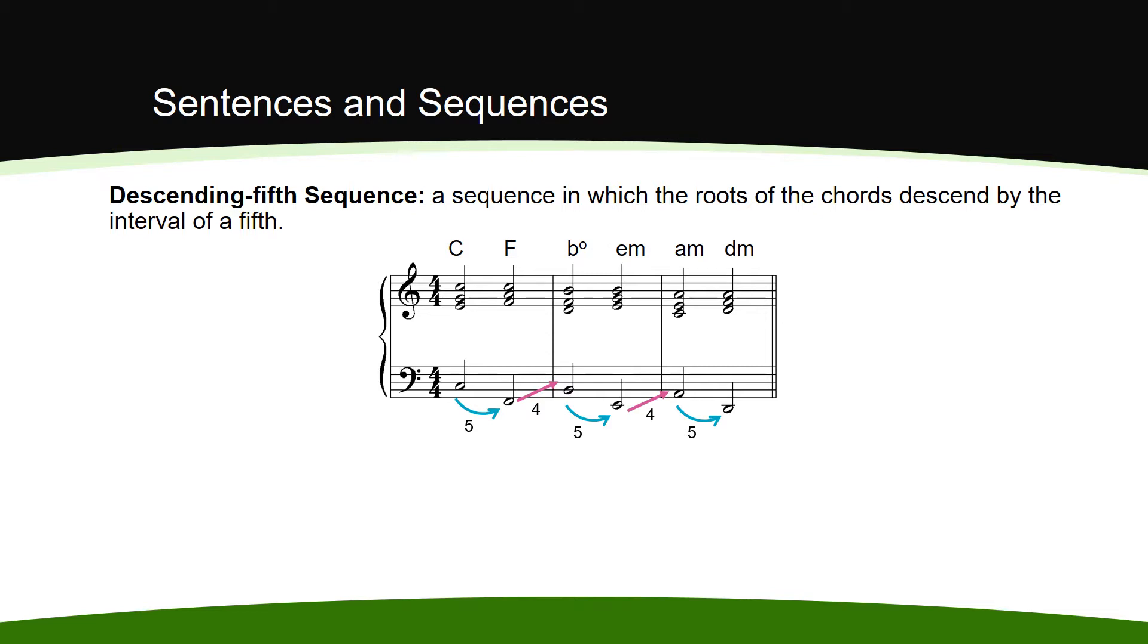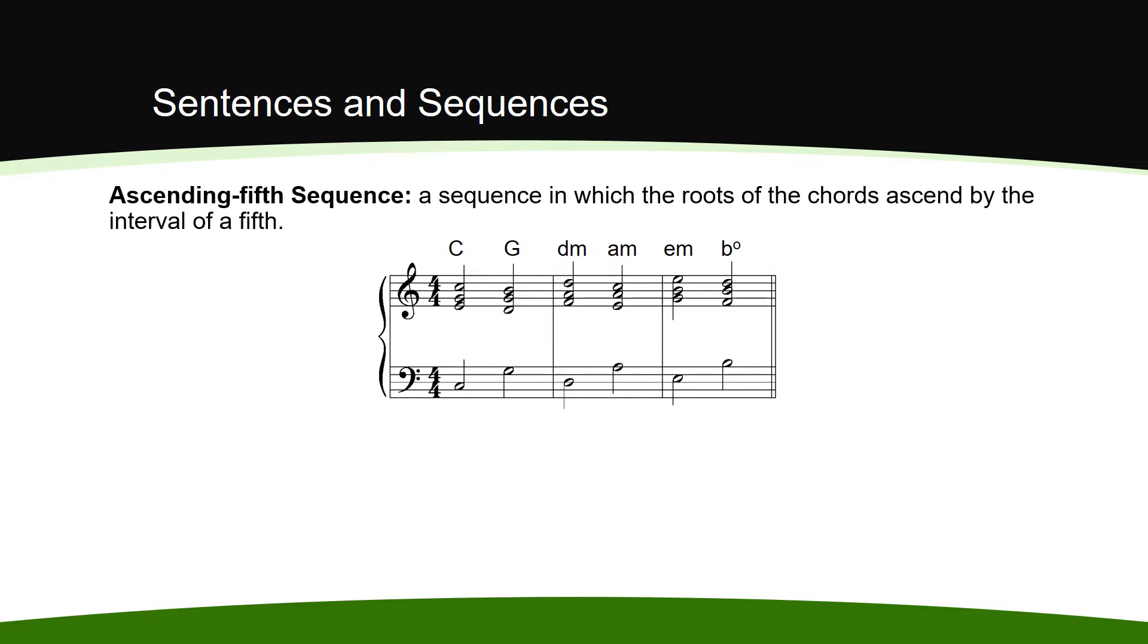An ascending fifth sequence is just like the descending fifth sequence, but with roots that ascend by fifth. Again, the fifth is inverted to a fourth on every other chord to keep the chord progression in a good range.